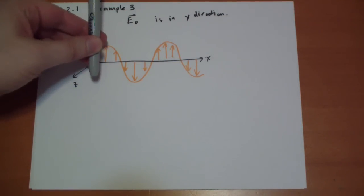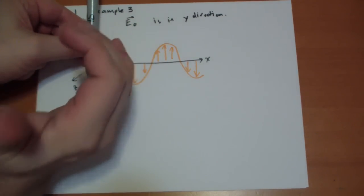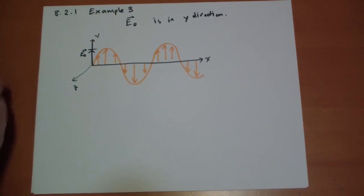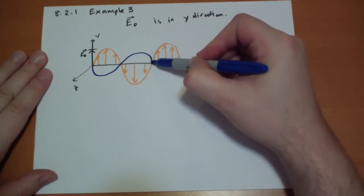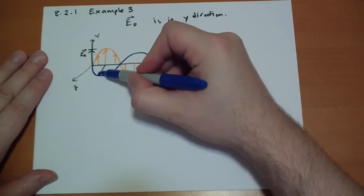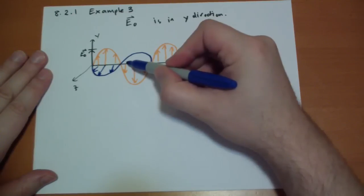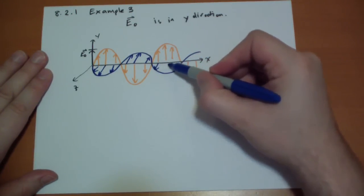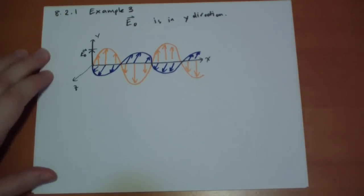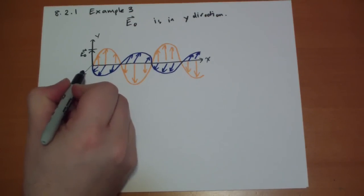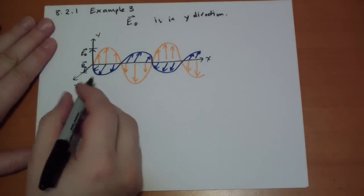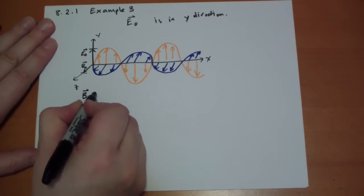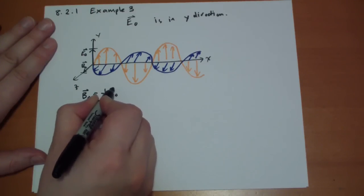And so the B field, let's see if I can draw this correctly, is pointing perpendicular in the Z direction. Okay, and let's use this one. And this is B-naught vector, or real of the complex part. And the important thing is the B-naught vector is equal to one over C times the E-naught vector.